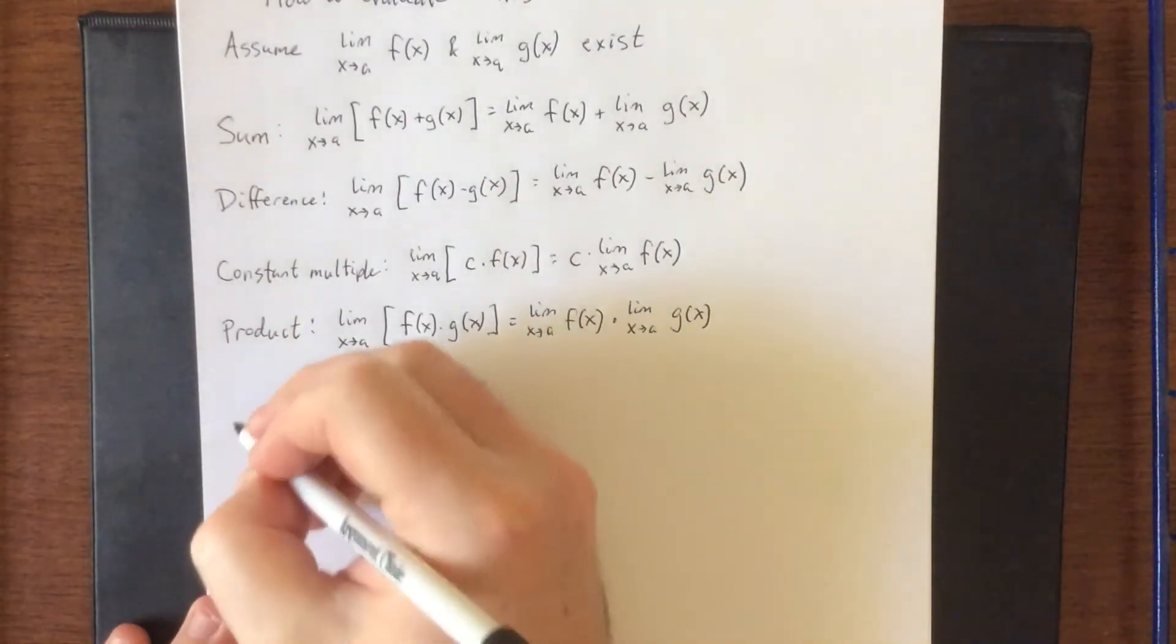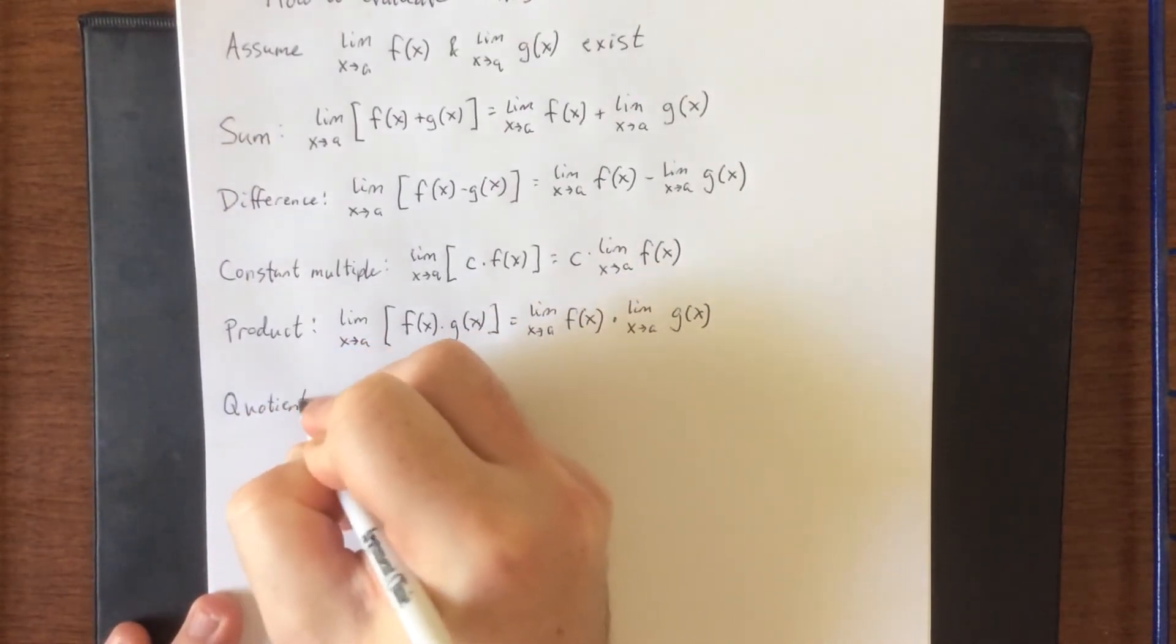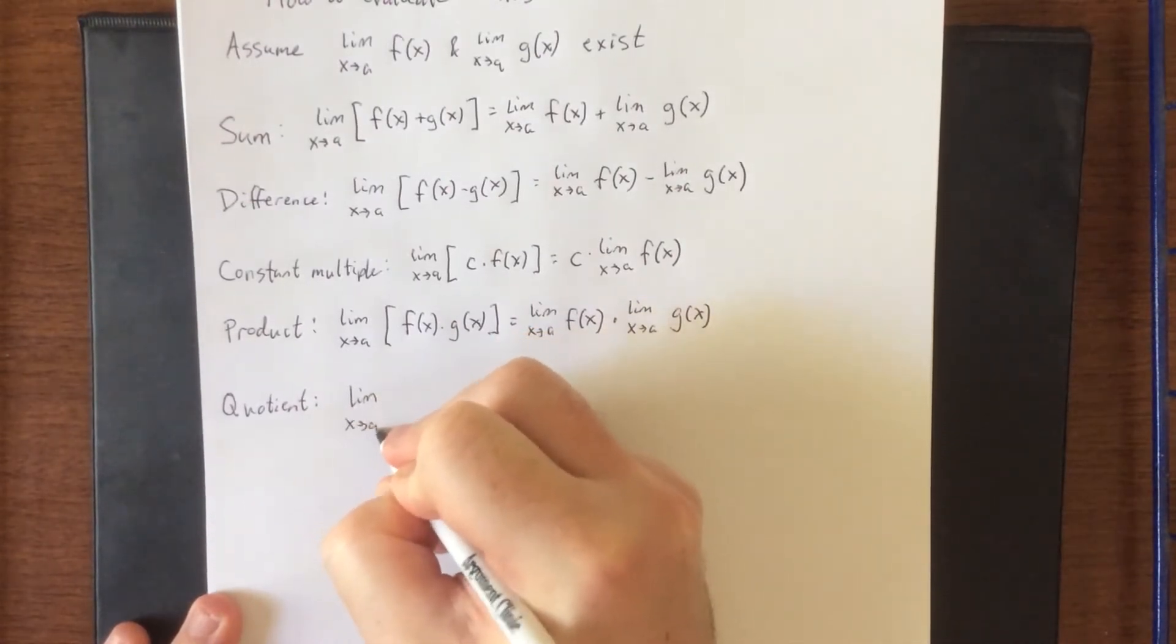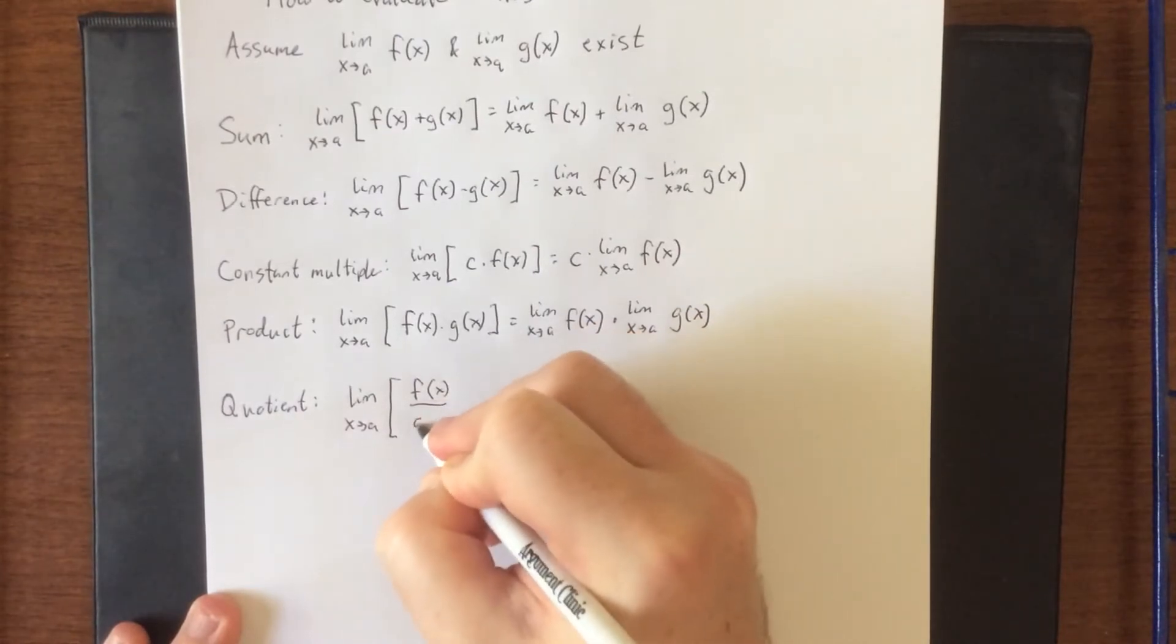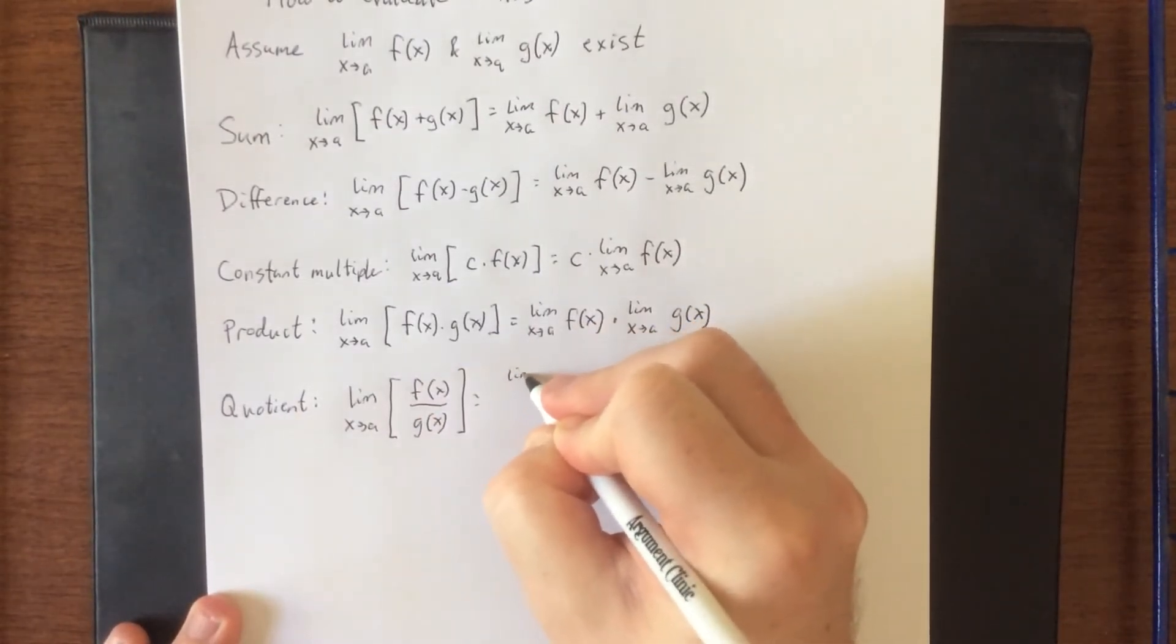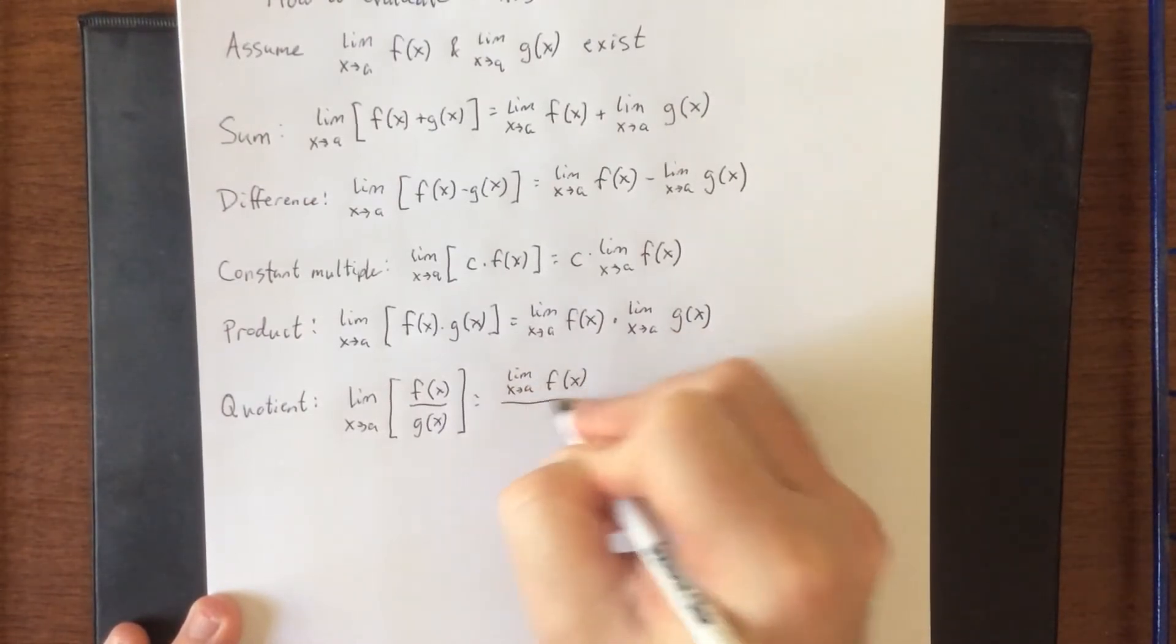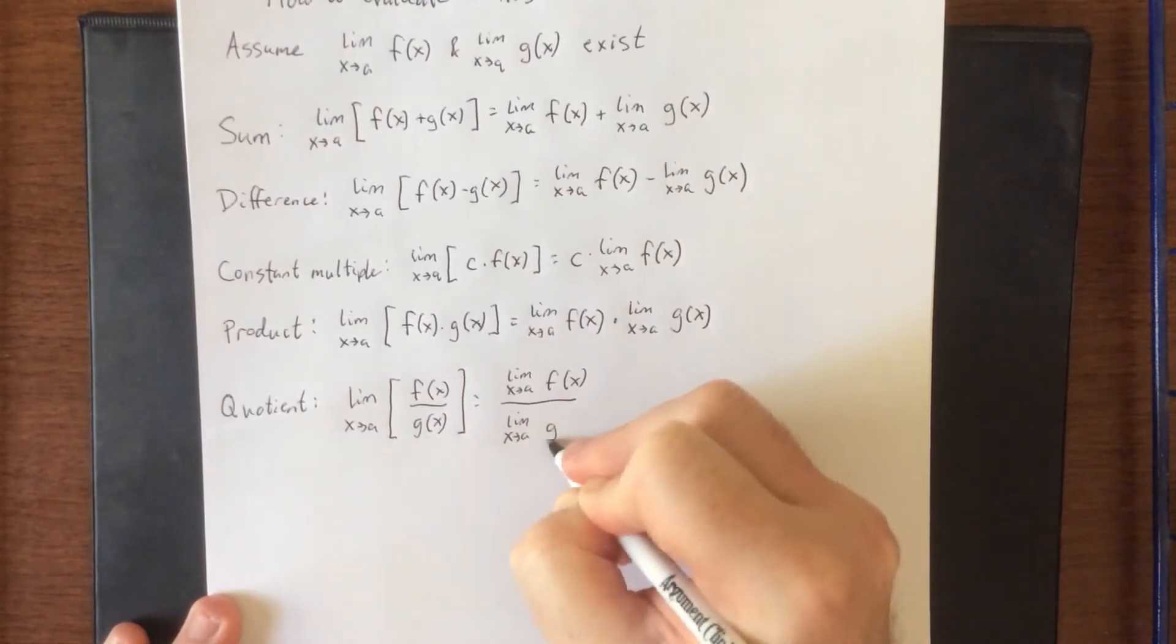Same holds true for quotients. If I take the limit as x approaches a of a quotient of two functions, that's like saying apply the limit as x approaches a to the numerator and apply the limit as x approaches a to the denominator.